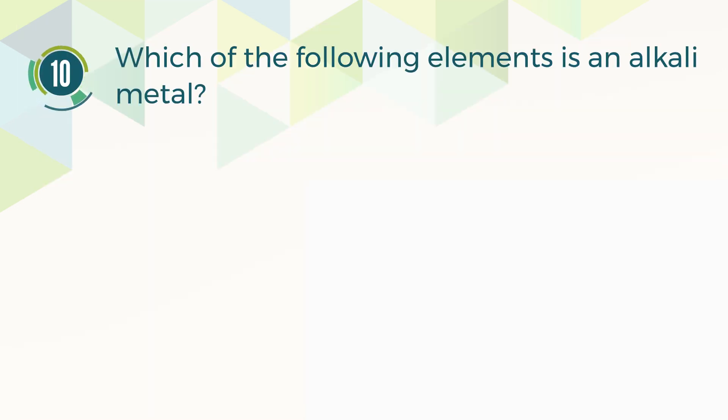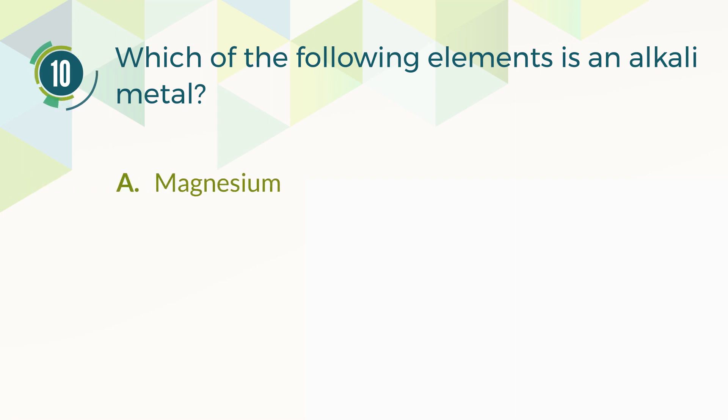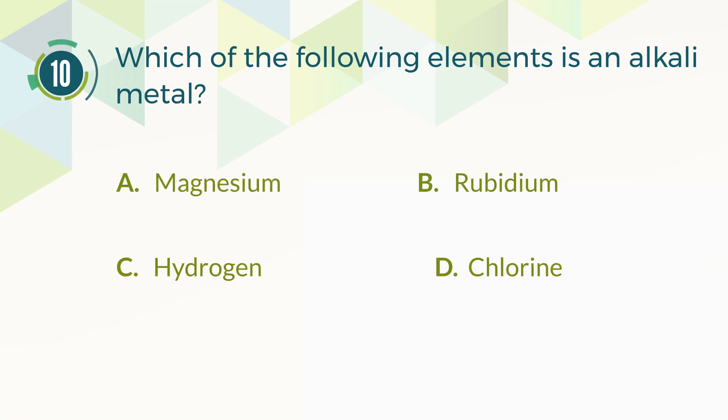Number 10. Which of the following elements is an alkali metal? A. Magnesium. B. Rubidium. C. Hydrogen. D. Chlorine.